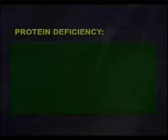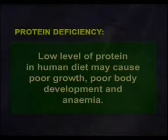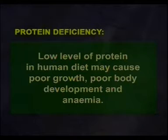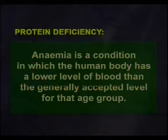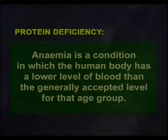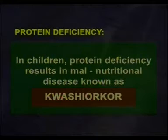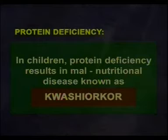Now, protein deficiency. Low levels of protein in the human diet may cause poor growth, poor body development, and anemia. Anemia is a condition in which the human body has a lower level of blood than the generally accepted level for that age group. In children, protein deficiency results in a malnutritional disease known as kwashiorkor. Children with kwashiorkor have lean limbs, swollen belly, scaly skin, and loss of hair.